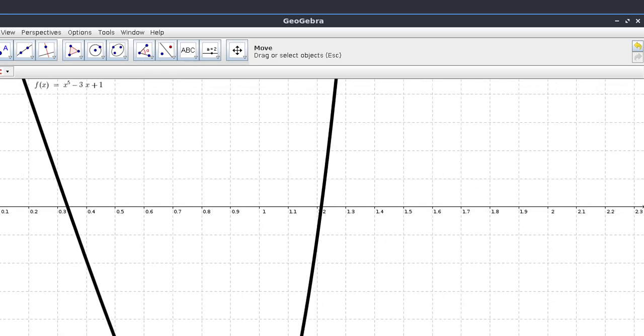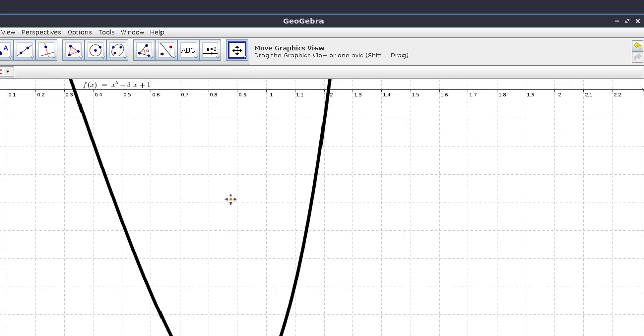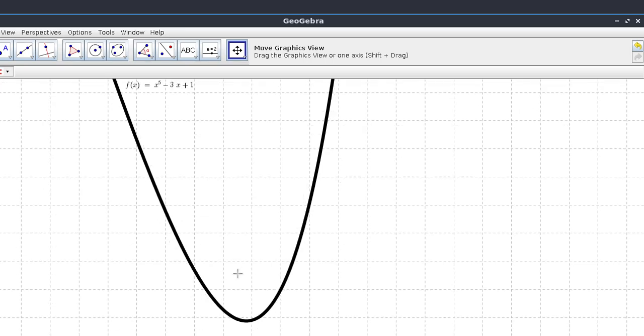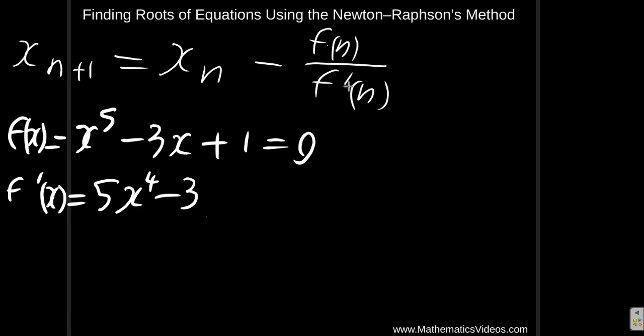Suppose we used some value that's further away from the root and it's close to the minimum value. Now remember, at the minimum value, f prime of x is 0, so you would have an indefinite calculation there because you'll be trying to put f of n divided by 0, well f prime of n.